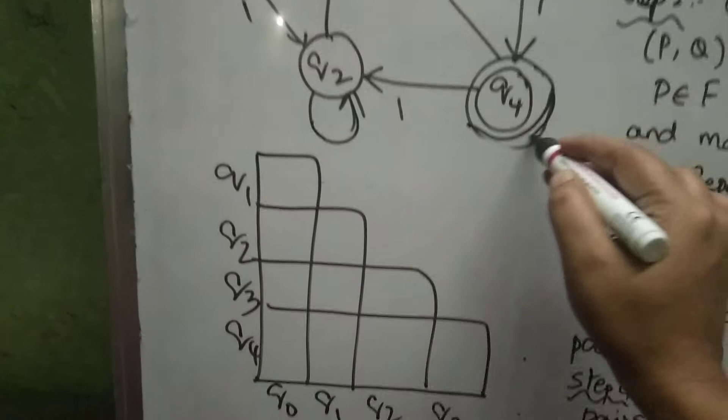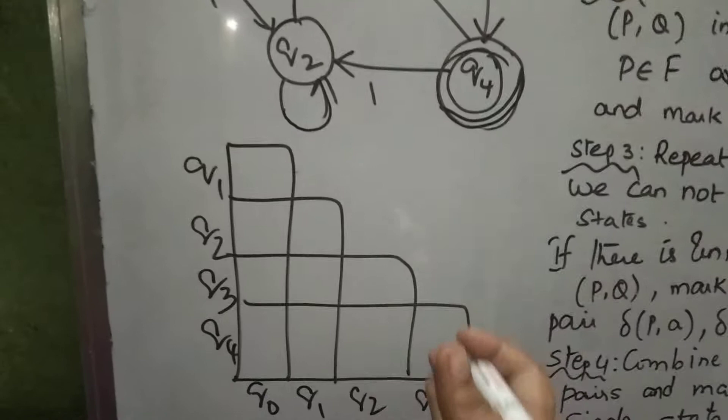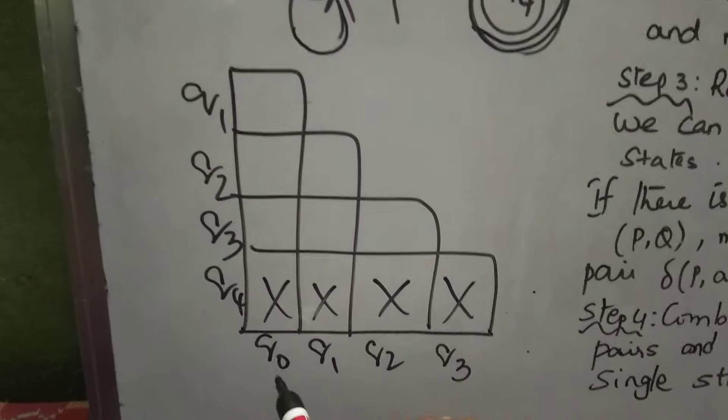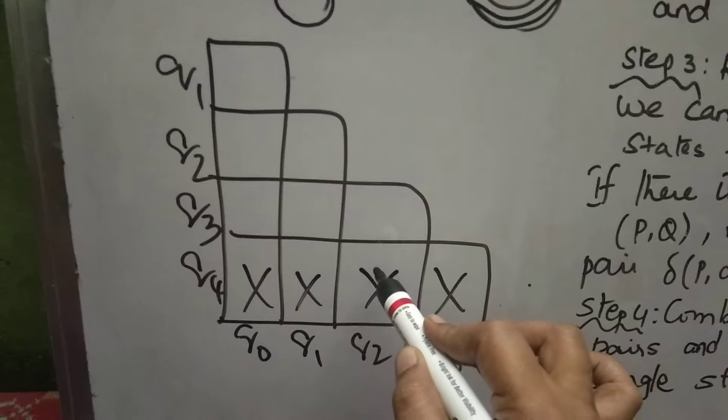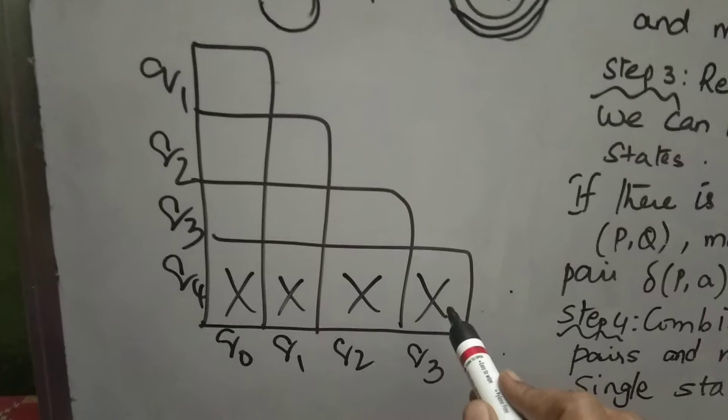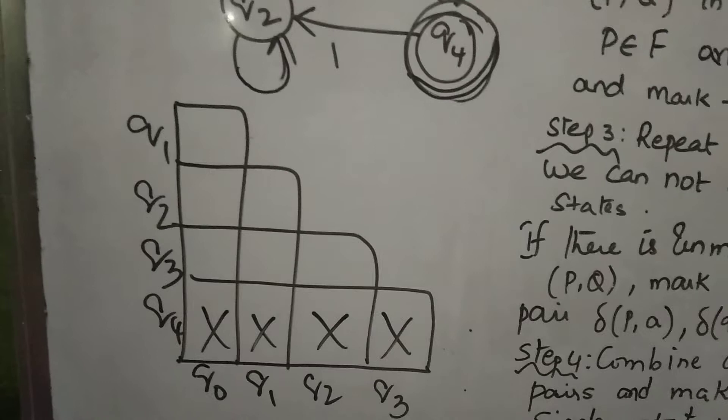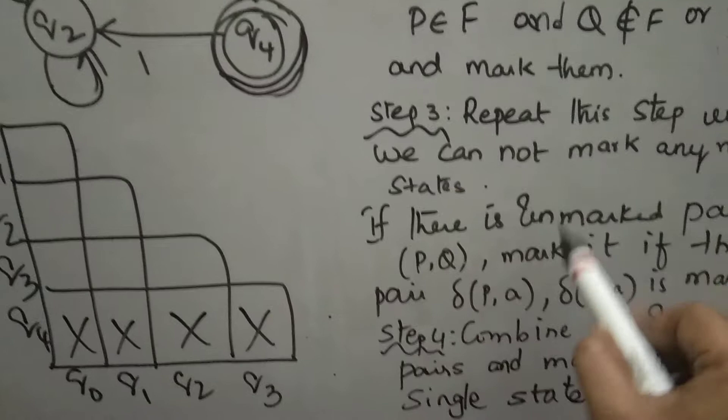Q4 is the final state in our DFA. So Q0, Q4 - Q0 is non-final, Q4 is final, so mark it. Q1, Q4 - Q1 non-final, Q4 final, mark it. Q2, Q4 - Q2 non-final, Q4 final, mark it. Q3, Q4 - Q3 non-final, Q4 final, mark it. Here we will complete step 1 and step 2. Now go to step 3. Repeat step 3 till unmarked pairs can be marked.